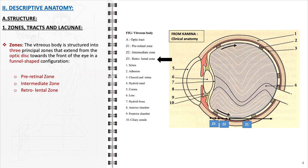The pre-retinal zone lies adjacent to the retina. The intermediate zone comprises the largest portion of the vitreous and maintains the gel-like consistency, while the retro-lental zone supports the back of the lens.